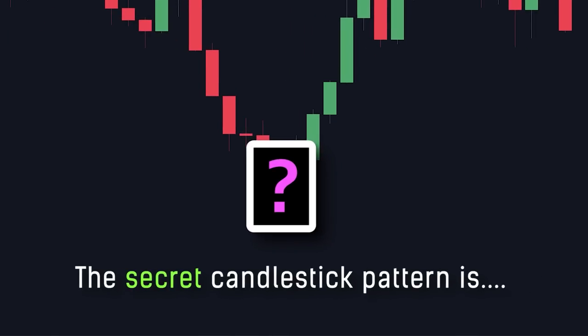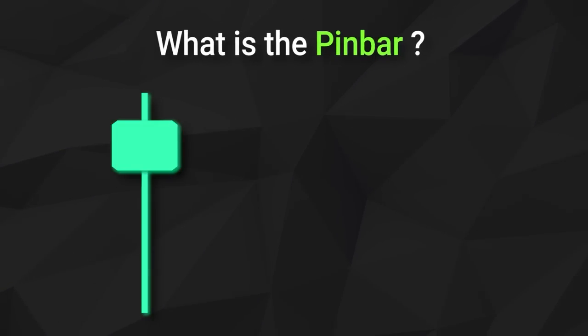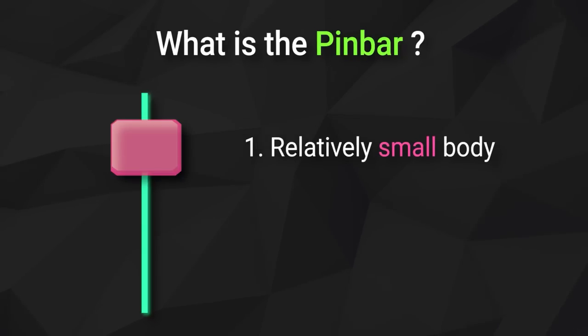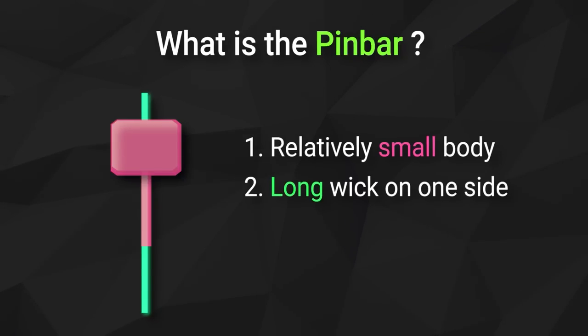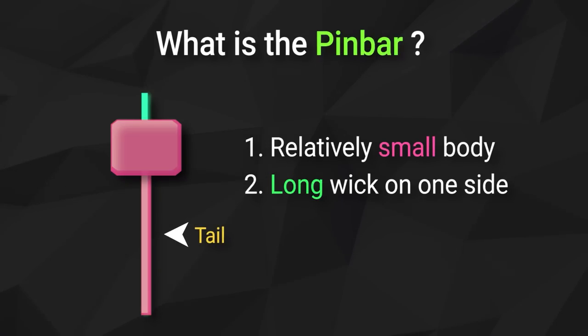The specific candlestick pattern that I'm talking about in this video is called the pin bar. So what is the pin bar? The pin bar is simply a candlestick pattern that follows these specific criteria. First, it has a relatively small body. And second, it has a relatively long wick that sticks out on one side — this is often referred to as the tail of the pin bar. In some variations of the pin bar, a smaller wick can be seen sticking out on the other side, often referred to as the nose of the pin bar.